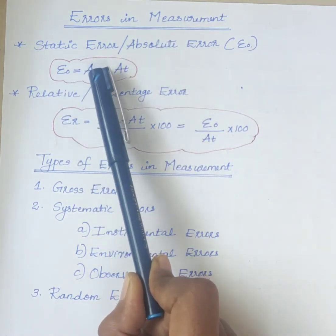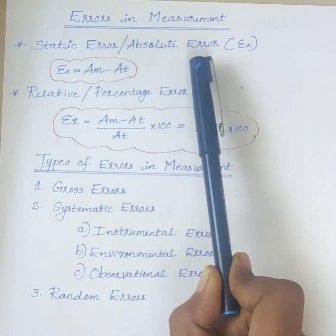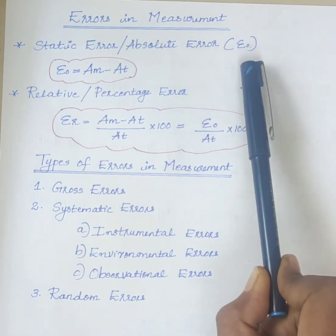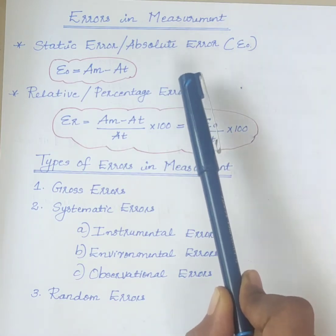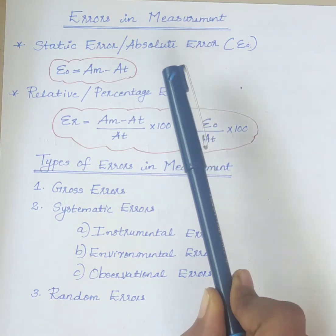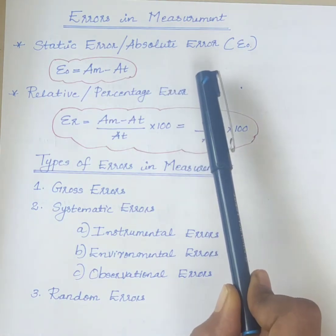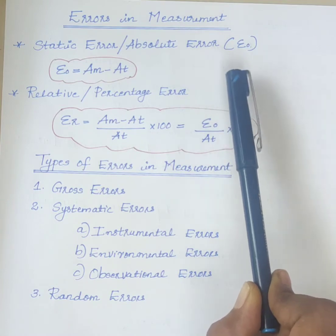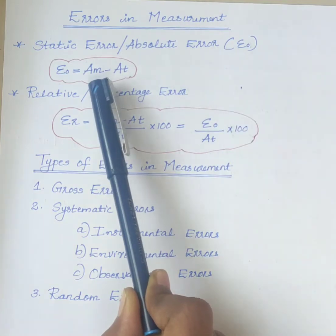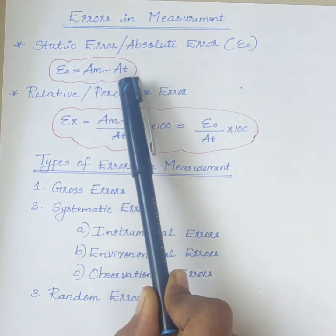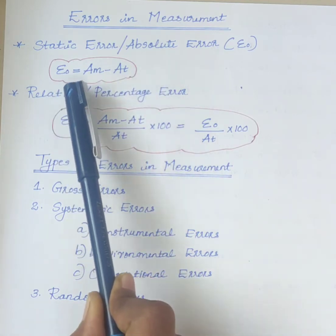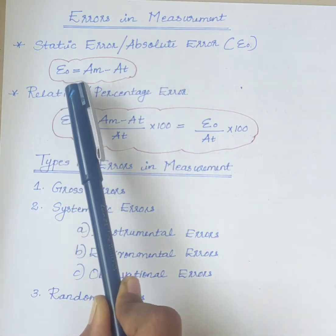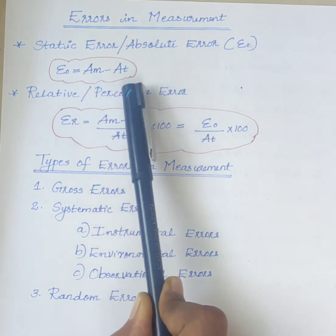First one is static error, also known as absolute error, represented as epsilon 0. It is the difference between measured value and the true value of unknown quantity. AM is the measured value and AT is the true value. Therefore, epsilon 0, static error, is equal to AM minus AT.